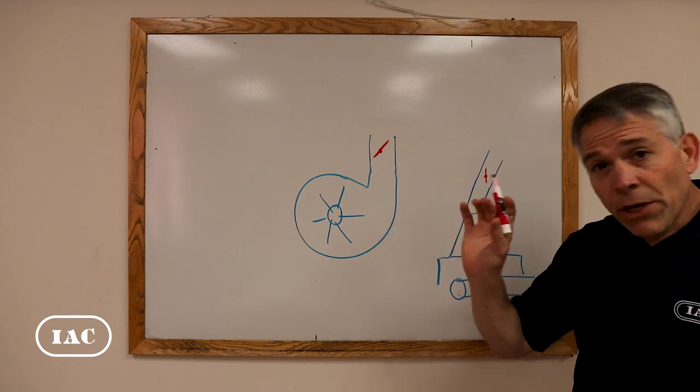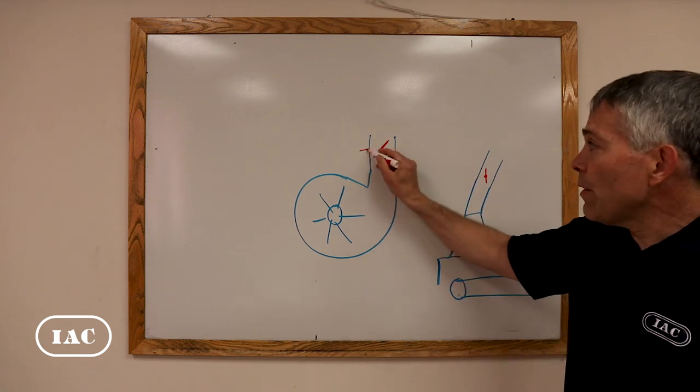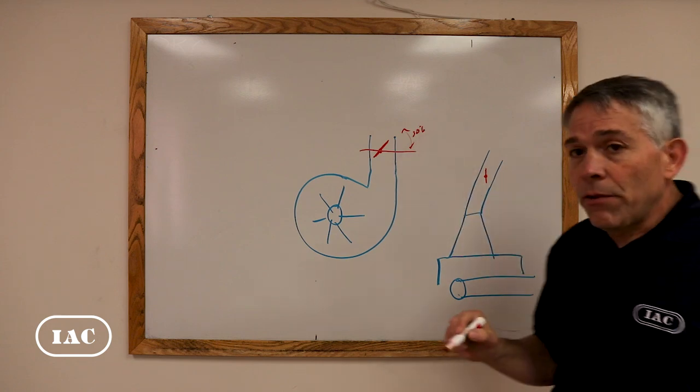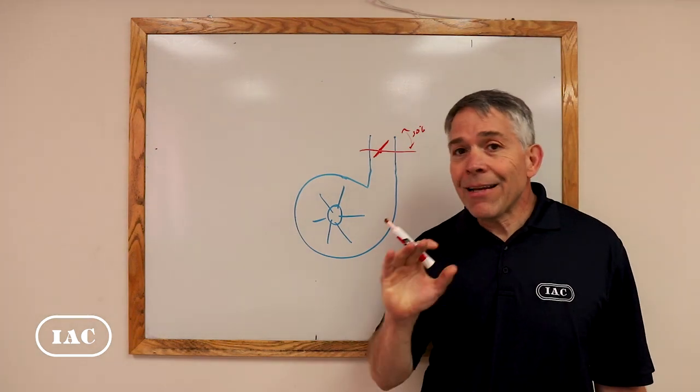But butterfly dampers are very quirky, meaning that if you see this in a position of 30%, people think that you're getting 30% of the flow and that is not the case.